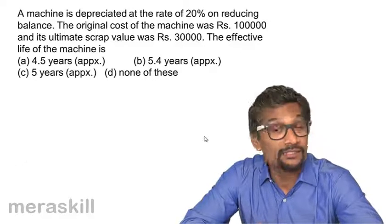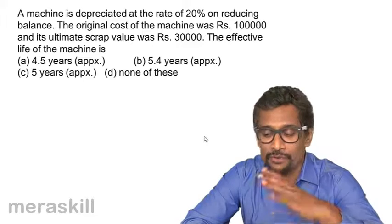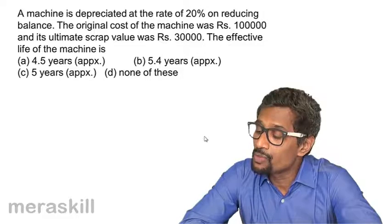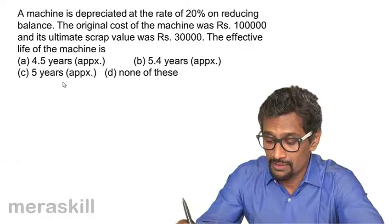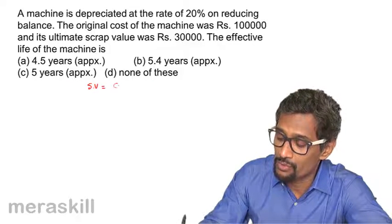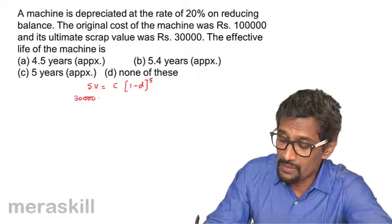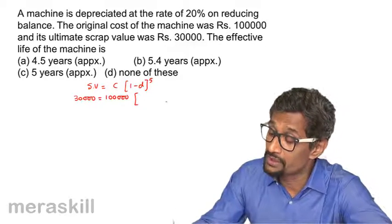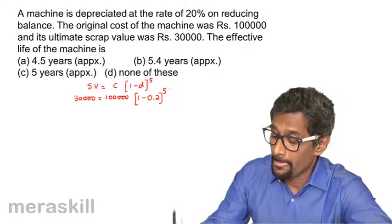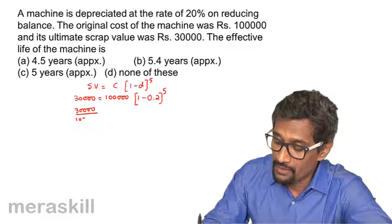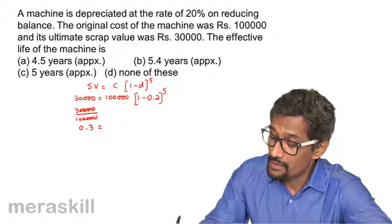A machine is depreciated at the rate of 20% on reducing balance, meaning depreciation takes place on the bad value at the end of every year. The original cost was ₹1,00,000 and its ultimate scrap value was ₹30,000. Using the formula: scrap value equals cost into (1 minus D) raised to n, we get 30,000 equals 1,00,000 into (1 minus 0.2) raised to n, giving us 0.3 equals 0.8 raised to n.